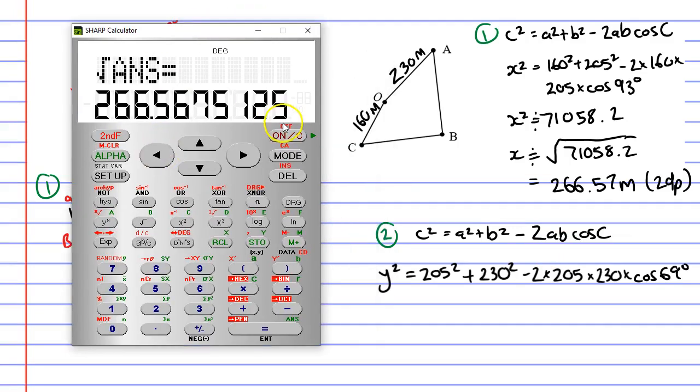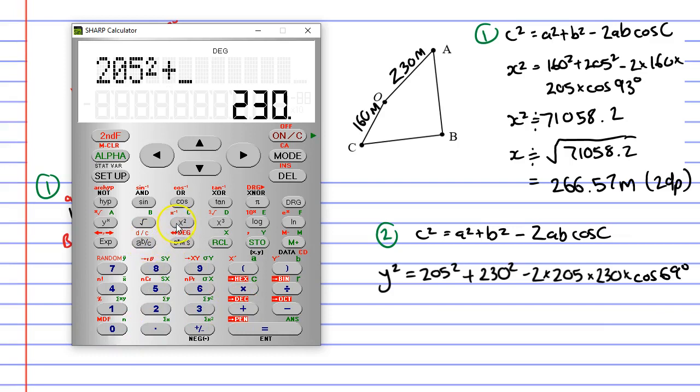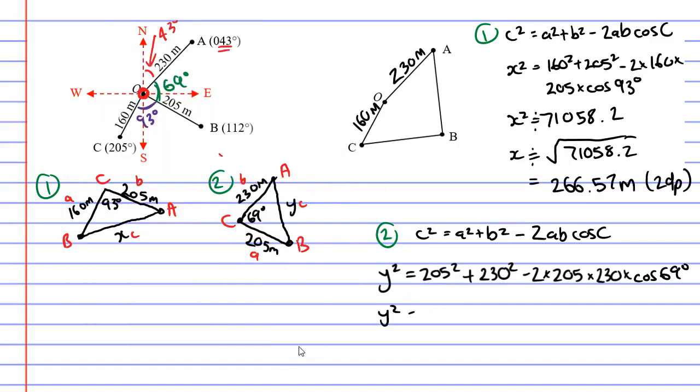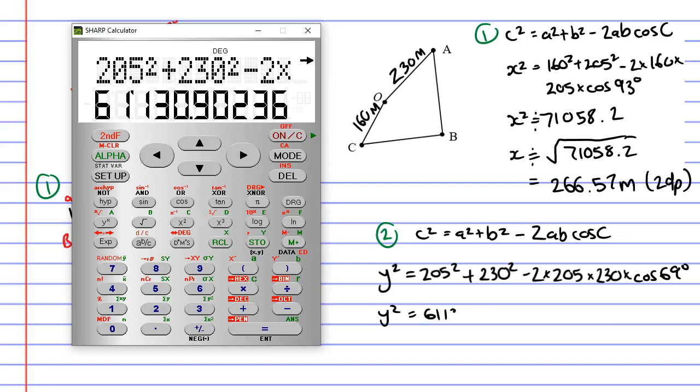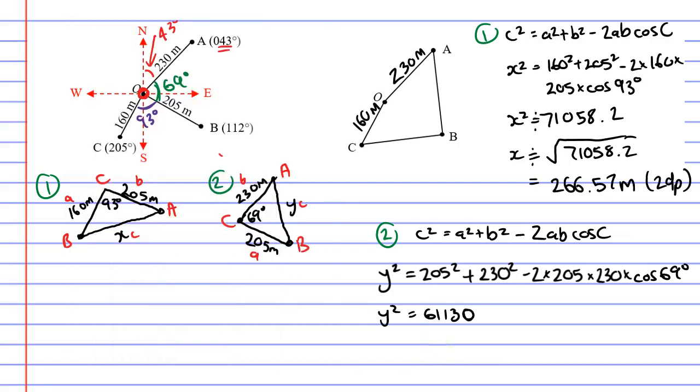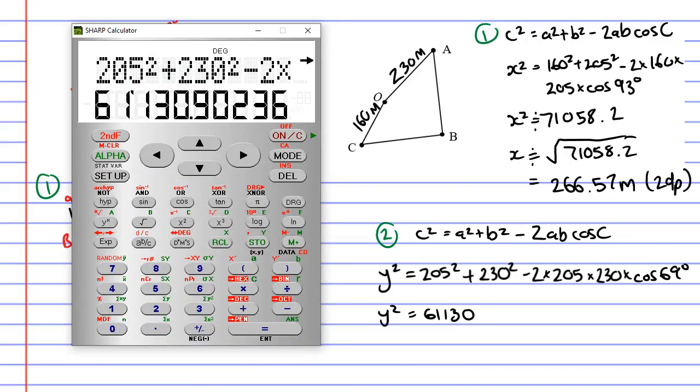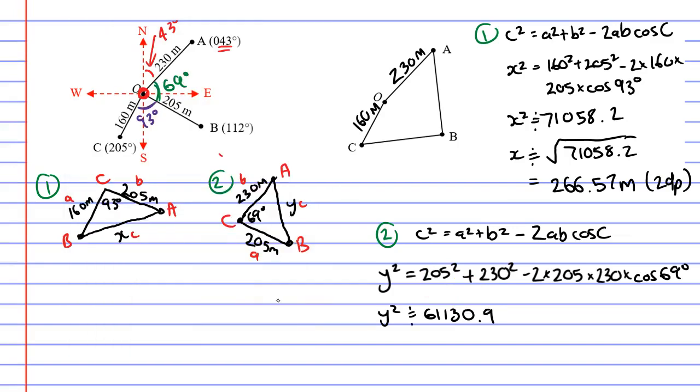Bringing up our calculator again. 205 squared plus 230 squared minus 2 times 205 times 230 times cos of 69. It's in degrees, so we know it's going to be right. Equals, there's our solution, 61,130.9. And we'll do it to one decimal place this time. Remembering this is an approximation.